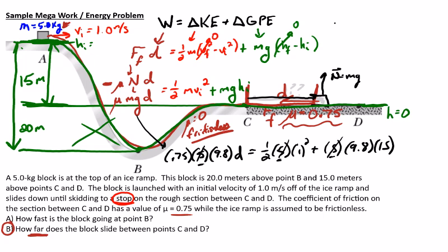Also, if I was moving faster, I would have to go farther. If I was coming from higher up, I would have to go farther — direct relationships. So to finish this out, after canceling the mass, we end up with 7.35 times d on the left side. On the right, one-half times 1 squared is just 0.5, and 9.8 times 15 is 147, so the whole right side is 147.5. Dividing by 7.35 gives d equal to approximately 20.068 meters.